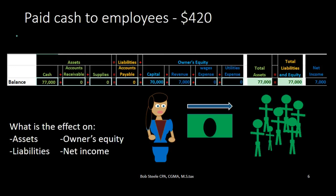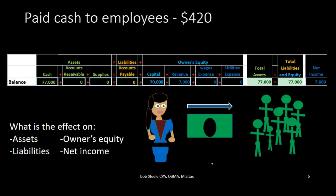We're looking at an accounting transaction involving paying employees with cash — $420 in this case. The owner is paying the employee with cash. We're going to record this using the accounting equation: assets equal liabilities plus owner's equity. Every transaction has at least two accounts affected, and every transaction will keep the accounting equation in balance. This is where we're starting off before the transaction.